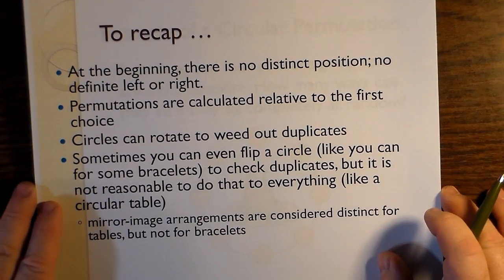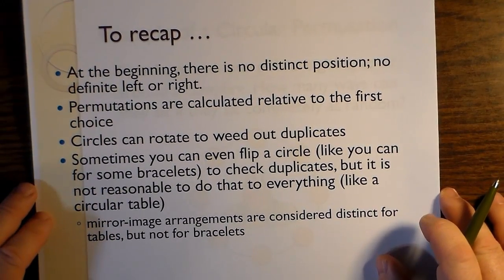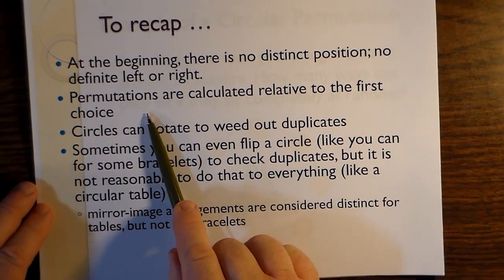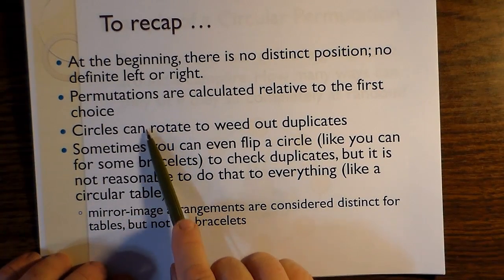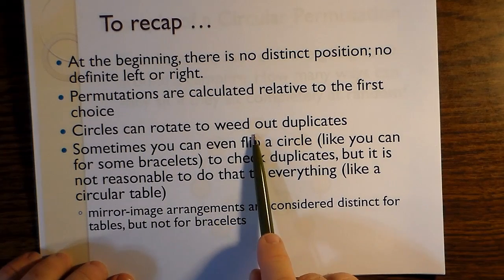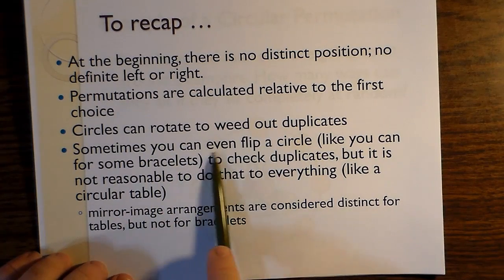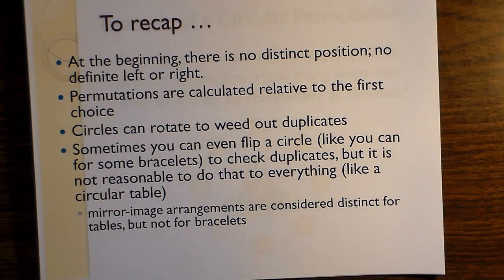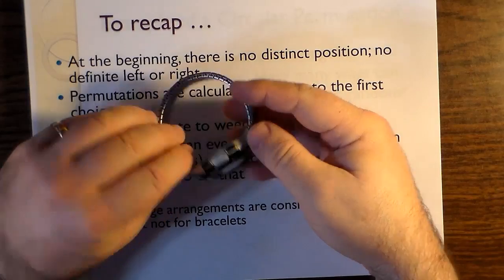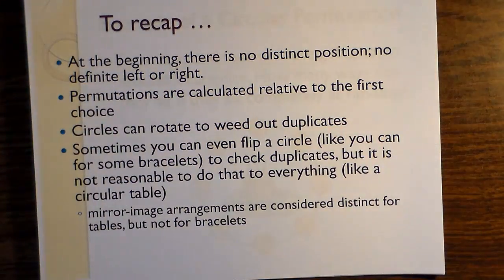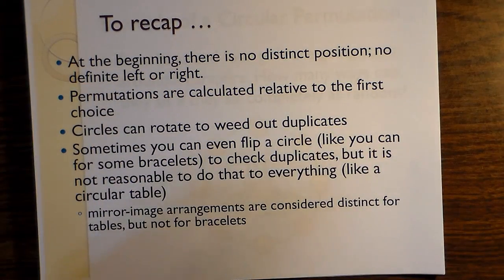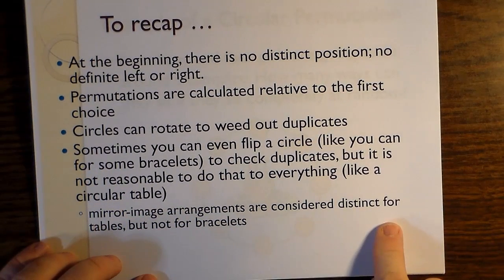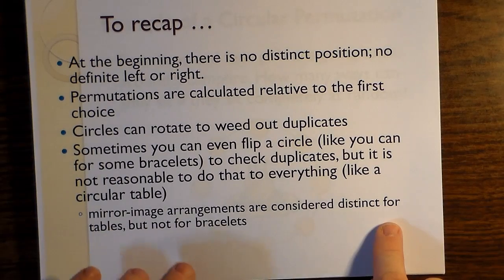To recap, at the beginning there is no distinct position. No definite left or right. Permutations are calculated relative to the first choice. Circles can rotate to weed out duplicates. Sometimes you can even flip a circle like you can for some bracelets to check duplicates. But it's not a reasonable thing to do for everything, like for example a circular table. Mirror image arrangements are considered distinct for tables, but not for bracelets.